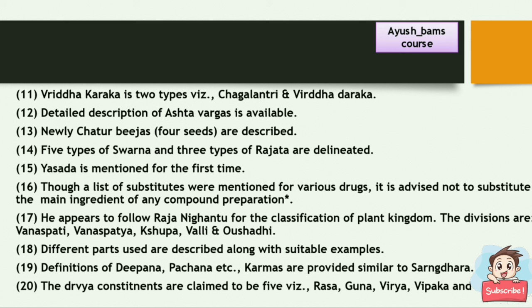Bhavamishra appears to follow Rajanikandu for the classification of the Plant Kingdom. The divisions are Vanaspati, Vanaspatya, Kshupa, Valli, and Aushari. Different parts used are described with suitable examples. Definitions of Deepana, Pajana, etc., and their Karmas are provided, similar to Shalanganara. The Dravya constituents are claimed to be five: Rasaguna, Vidya, Vipaka, and Prabhava.